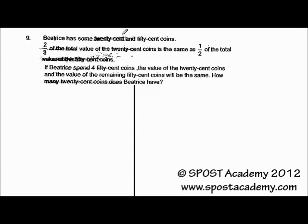According to the second sentence, two-thirds of the total value of the $0.20 coins is the same as half of the total value of the $0.50 coins. Now, you have to take note that it's actually referring to value. Let's draw a model. In terms of value, which means money, the $0.20 coins, two-thirds of it, has got the same value as the $0.50 coins.